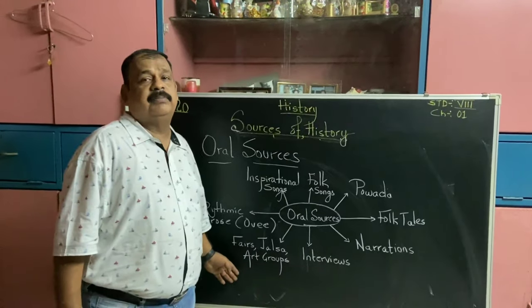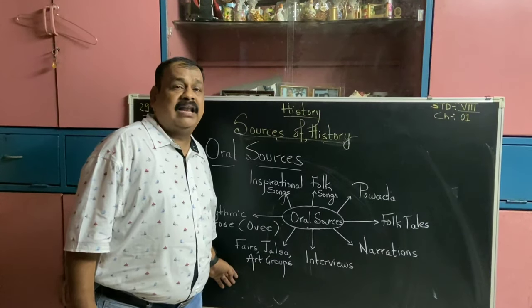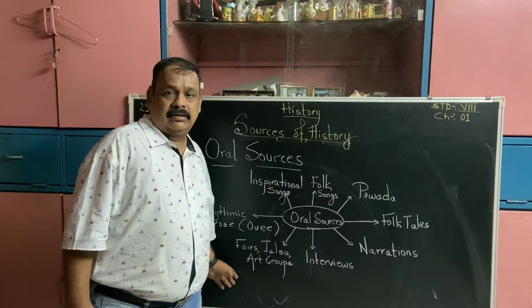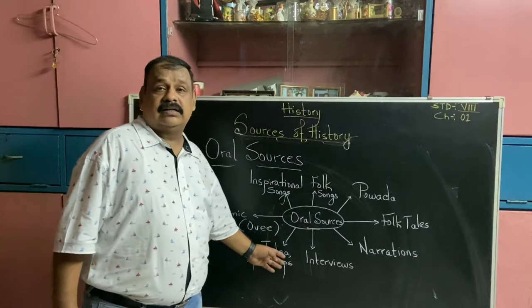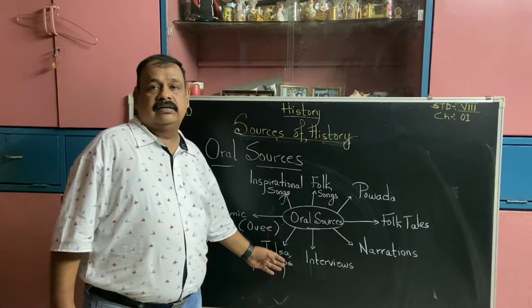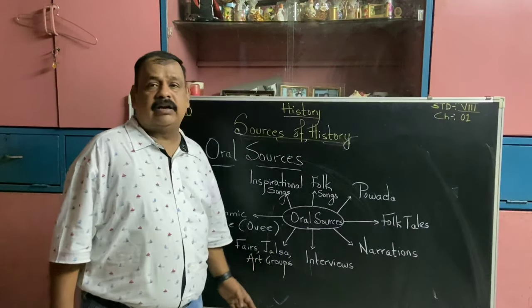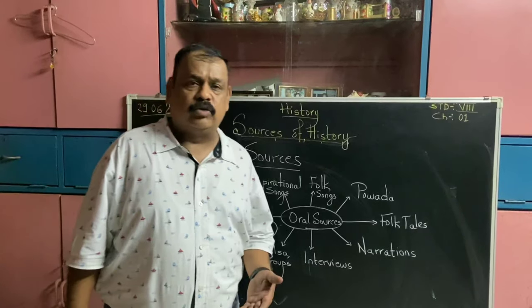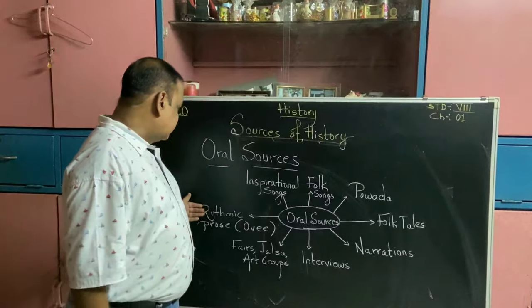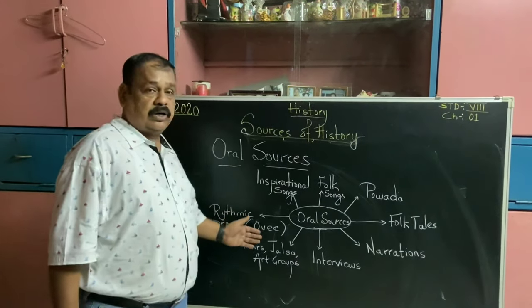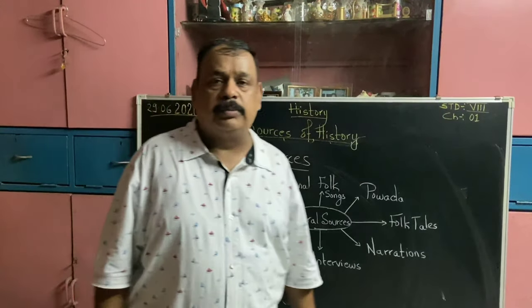The next oral source is fairs — here the word fair literally means Mela. Then Jalsa, which is again a celebration. Next are art groups — there are many art groups and band groups which perform different kinds of arts. The next is rhythmic prose, also called Ovi. These Ovis were also being written and they were composed in praise — they are a different and traditional style of Maharashtra.